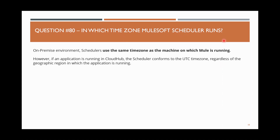Last question: in which time zone does the MuleSoft scheduler run? For on-premise environments, the scheduler uses the same time zone as the machine on which the Mule runtime is running. For example, if your MuleSoft Enterprise Server is running in Singapore timezone and you schedule something for 8 AM, it runs at 8 AM Singapore time.